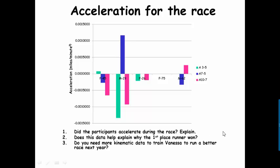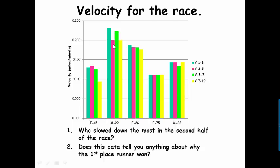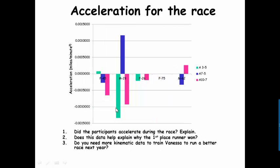Did the participants accelerate during the race? Explain. Well, yes, they did. Some accelerated in the positive direction, and some accelerated in the negative direction. Those that accelerated in the positive direction were going faster, and those that accelerated in the negative direction were slowing down. So you can see the 45-year-old female accelerated in the beginning and then just kept slowing down the entire race. Here you have the male 29. So this is between the first velocity and the second velocity. He did slow down. You can see from between blue and pink. So he decelerated or slowed down. Then he accelerated, and then he slowed down again.